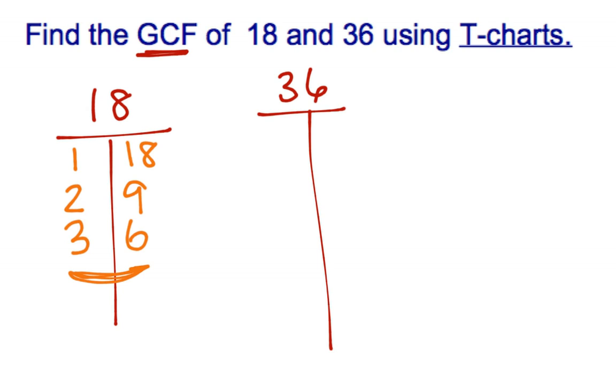And we do the same thing for 36. 1 will go into it 36 times. 2 goes into it because it's even. 2 times 18. 3 plus 6 is 9, so 3 goes into this number. 3 times 12.